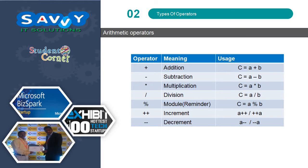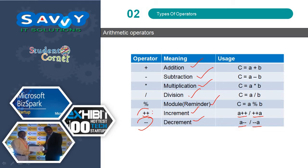Coming to Arithmetic Operators, we have Addition, Subtraction, Multiplication, Division, Modulo, Increment, and Decrement. Increment and Decrement Operators are of two kinds: Post-Increment and Pre-Increment, Post-Decrement and Pre-Decrement — these are the four kinds.